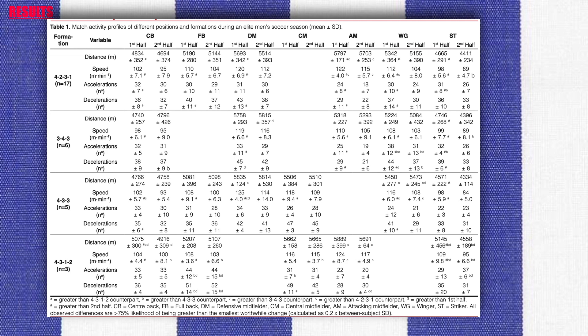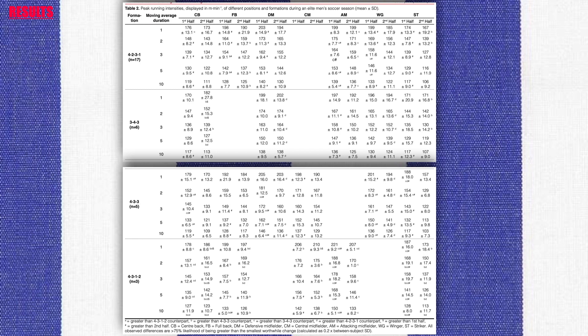All positions displayed greater average speed in the first half compared to the second half in the 4-2-3-1, 3-4-3, and 4-3-3 formations. The acceleration and deceleration profiles for full backs were greater in the 4-3-1-2 formation than all other formations. The average speed in the first half for defensive midfielders playing in the 4-3-3 formation was greater than all other formations.